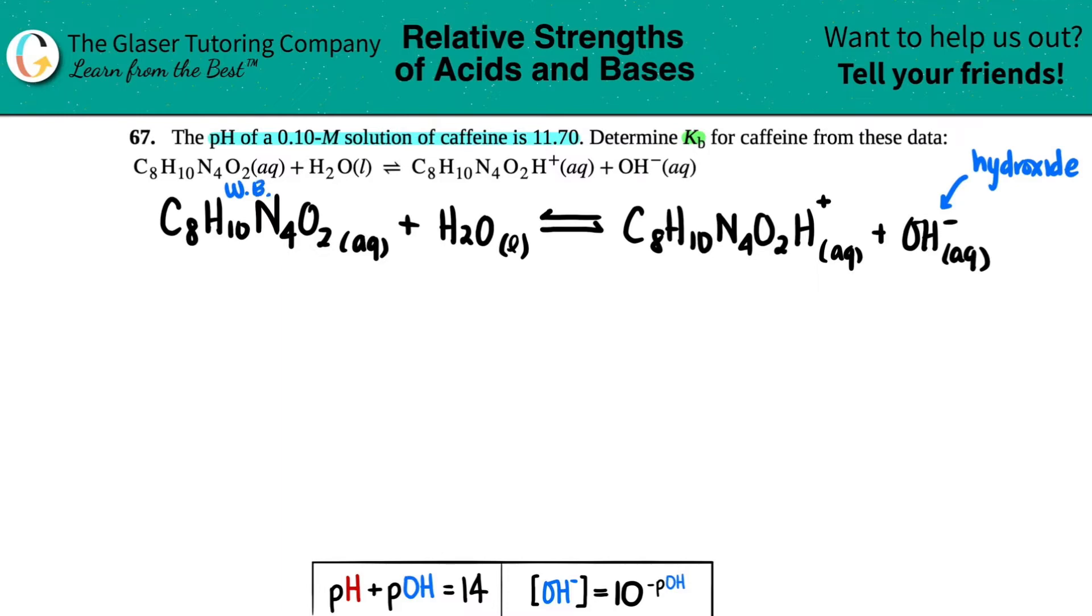And then likewise, if you produce either H plus in solution at the end or H3O plus, that shows that your initial compound was an acid. And also, they did say that we needed to find the KB. B stands for base. So it kind of goes together.